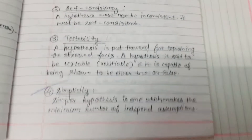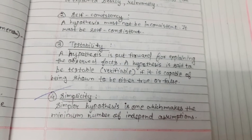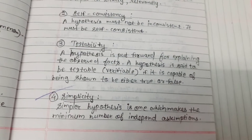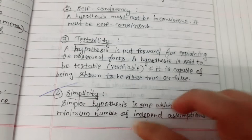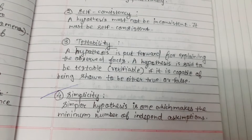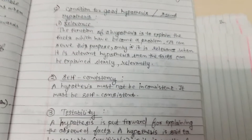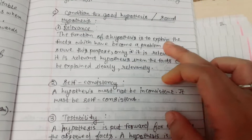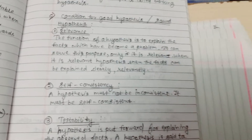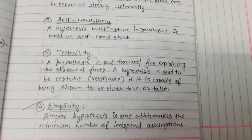Condition 4: Simplicity. A simpler hypothesis is one which makes the minimum number of independent assumptions. So these are the conditions for a good hypothesis or for a sound hypothesis.